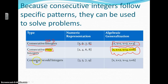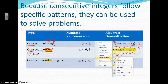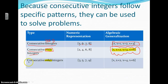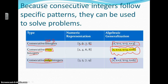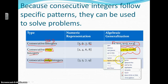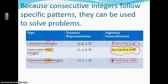Now look at the next one. It says consecutive odd integers. For example, 3, 5, 7, 9 — those are odd integers. The setup, if you notice, is X, X plus 2, X plus 4, X plus 6. That is the setup if it says odd integers. Take a look and you'll notice that consecutive odd and consecutive even are the same setup.